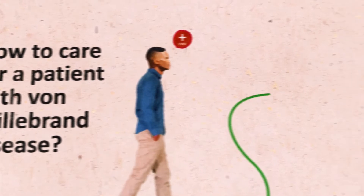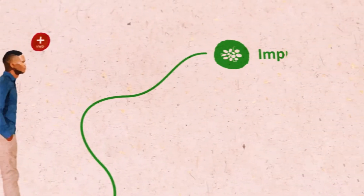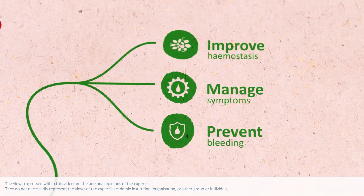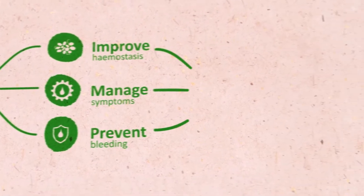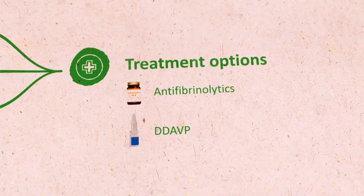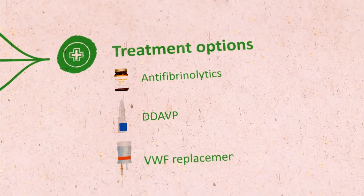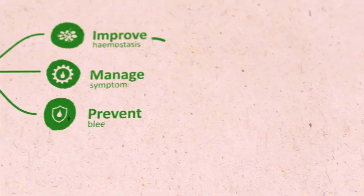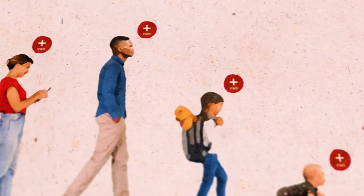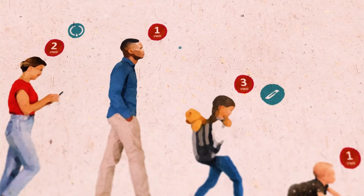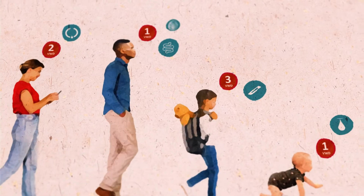There are several treatment options to improve haemostasis, manage symptoms, and prevent excessive or prolonged bleeding in patients with von Willebrand disease: anti-fibrinolytics, DDAVP, and von Willebrand factor replacement therapy. The haematologist decides on the most suitable care plan for each patient based on their type of disease, the severity, and clinical circumstances.